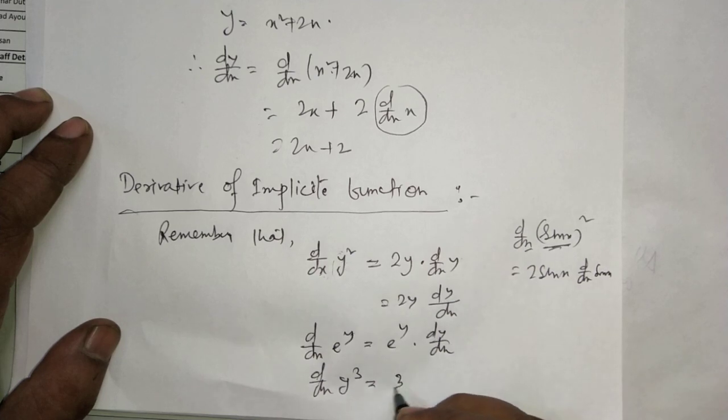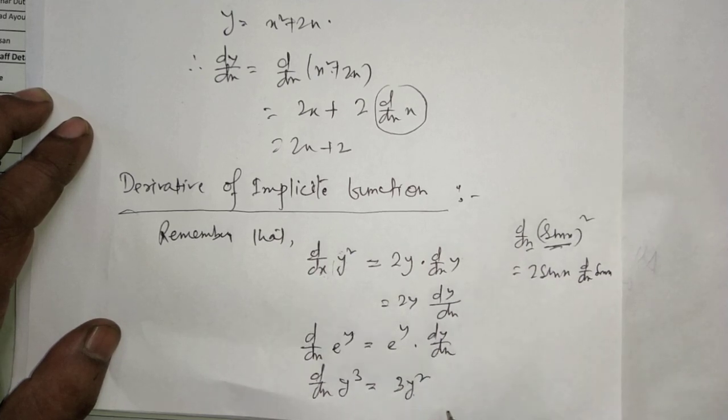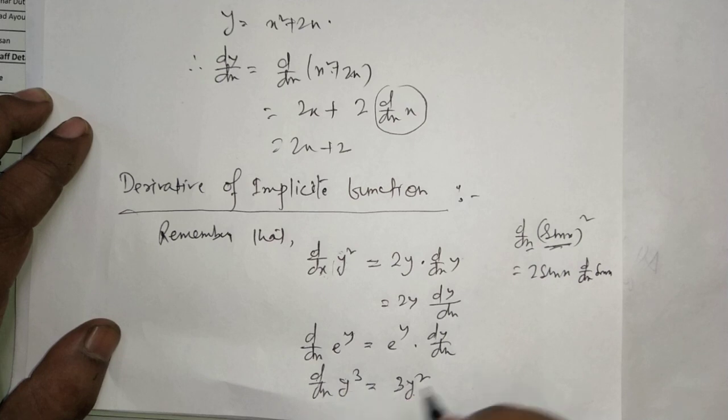You have to remember: d/dx of y cubed. It will be 3y squared, but since y and x are different, we again multiply by d/dx of y, which is dy/dx. So d/dx of y³ equals 3y² times dy/dx.